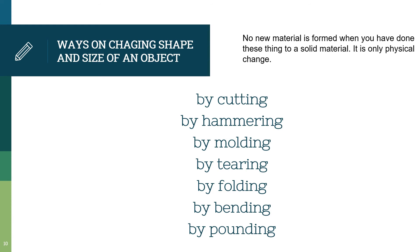No new material is formed when you do these things to a solid material. It is only a physical change. Nothing new is created — no new material is formed when you do all of these to an object. Only the physical change happens, meaning only the outer appearance of the object changes and nothing else.